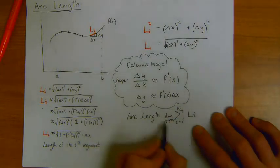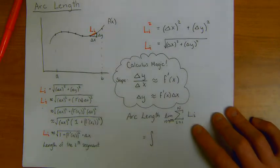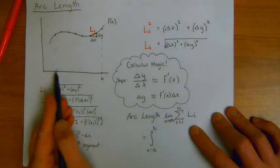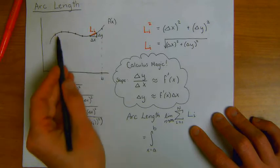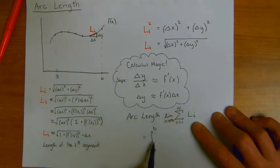And the exact value, the limit of this sum is going to be the integral. In this case, my starting point was x equals a to x equals b, the starting and stopping point of my length.